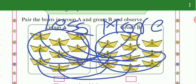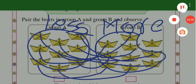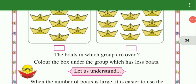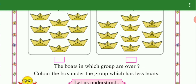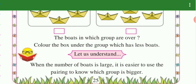Where the pair is complete and where the pair is, the pair is complete. Next, the boat in which group is over. Color the box under the group which has less boat. Let's understand — when pairing is complete, the pair of boats is large. It is easier to use pairing to know which group is bigger.